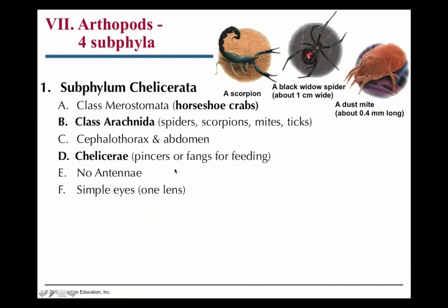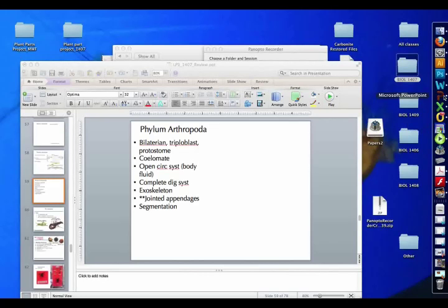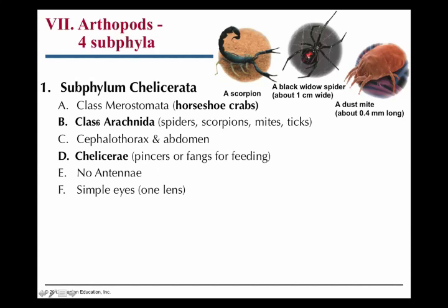One group is the Chelicerata. Within that group, the class you need to know is Arachnida, which includes spiders, scorpions, mites, and ticks. They have what we call chelicerae, which are their pinchers or fangs — like the fangs on a spider. Those are chelicerae. That's one way you identify an arachnid. Another way is their leg count: they have four pairs of walking legs.